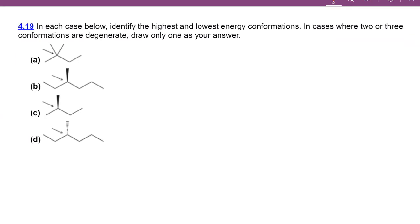In each of the cases below, we want to identify the highest and lowest energy conformations. In cases where two or three conformations are degenerate, draw only one as your answer. I worked A and B in a previous video; in this video I'm going to work C and D. We're going to use Newman projections to predict the highest energy and lowest energy conformations of these molecules. For C, I'm going to look straight down this carbon-carbon bond. My front carbon I'm going to represent as a dot. Straight down I've got a methyl group. Up and to my right I have a methyl group. Up and to my left, which would be on a dash, I have a hydrogen.